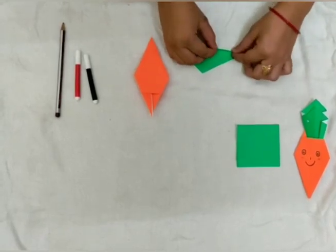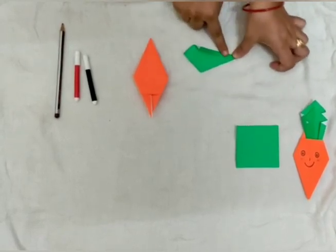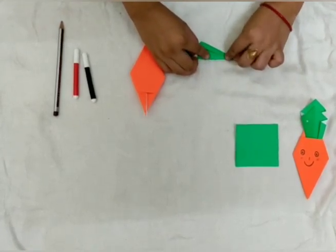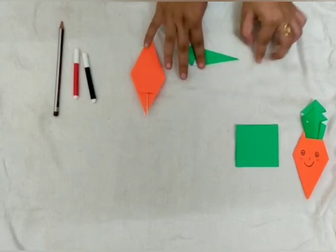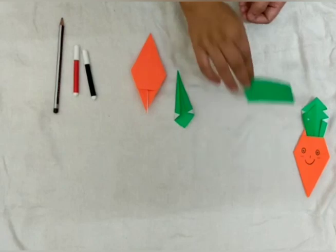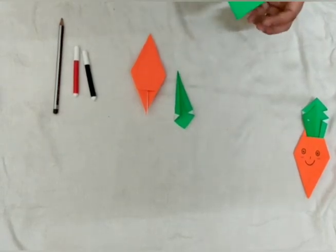Little bit. Not fully. Little bit will fold like this. See? And it will look like this. And we will do one more time from this origami sheet.